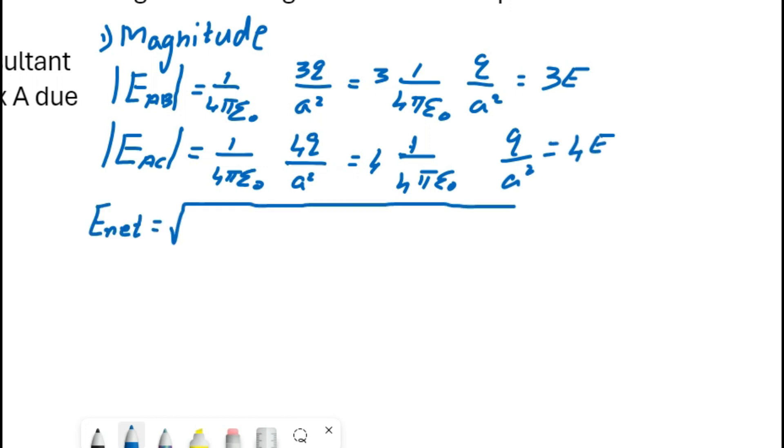Because 1 by 4πε₀ Q by A square equals E, so 4E. Now we can write the resultant: E_net equals, you remember that equation, square root of A square plus B square plus 2AB cos theta.